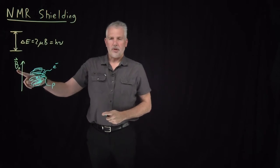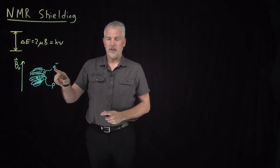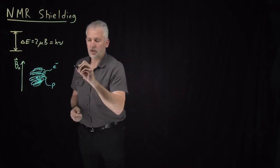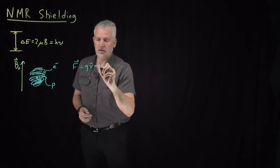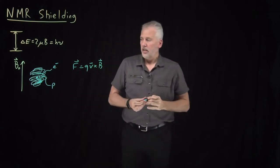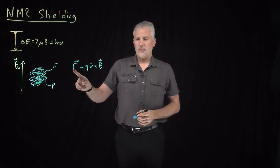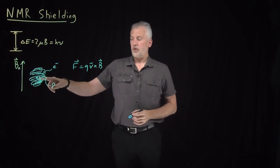You might remember from physics class that what a magnetic field does to a moving electrical charge, like the charge on this electron, is it exerts a force on that charge called the Lorentz force. So a moving electrical charge like the electron experiences some force.